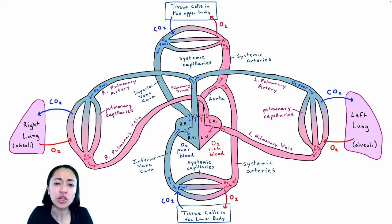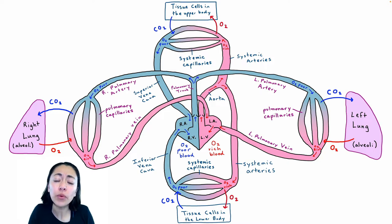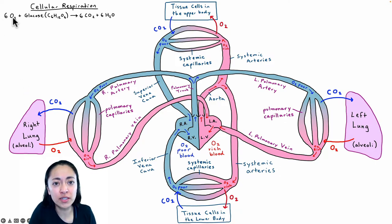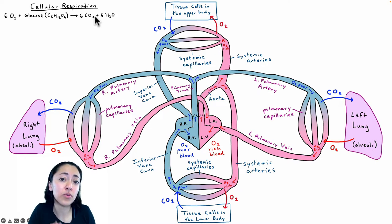This schematic shows the circulatory system. It's important to understand how blood flows through our body to understand how oxygen makes its way to all of our tissue cells. Each cell in our body requires oxygen for cellular respiration — a chemical process where six molecules of oxygen and one molecule of glucose are converted into six molecules of carbon dioxide and six molecules of water. This carbon dioxide is a waste product that we get rid of through exhaling.